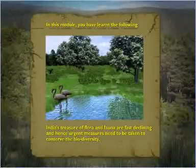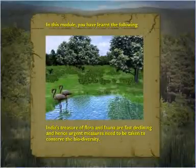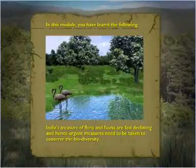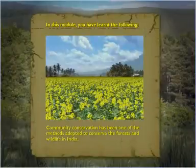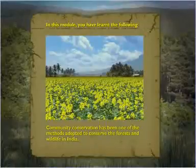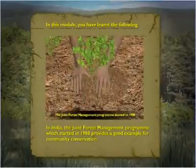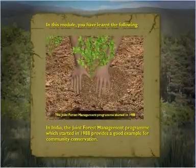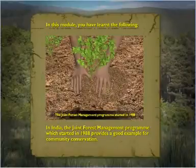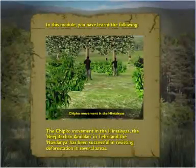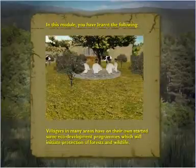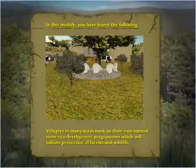In this module, you have learnt the following. India's treasure of flora and fauna are fast declining and hence urgent measures need to be taken to conserve the biodiversity. Community conservation has been one of the methods adopted to conserve the forest and wildlife in India. The Joint Forest Management Program, which started in 1988, provides a good example for community conservation. The Chipko movement in the Himalayas, the Beej Bachao Andolan in Tehri and the Navdanya have been successful in resisting deforestation in several areas. Villagers in many areas have on their own started eco-development programs which will initiate protection of forests and wildlife.